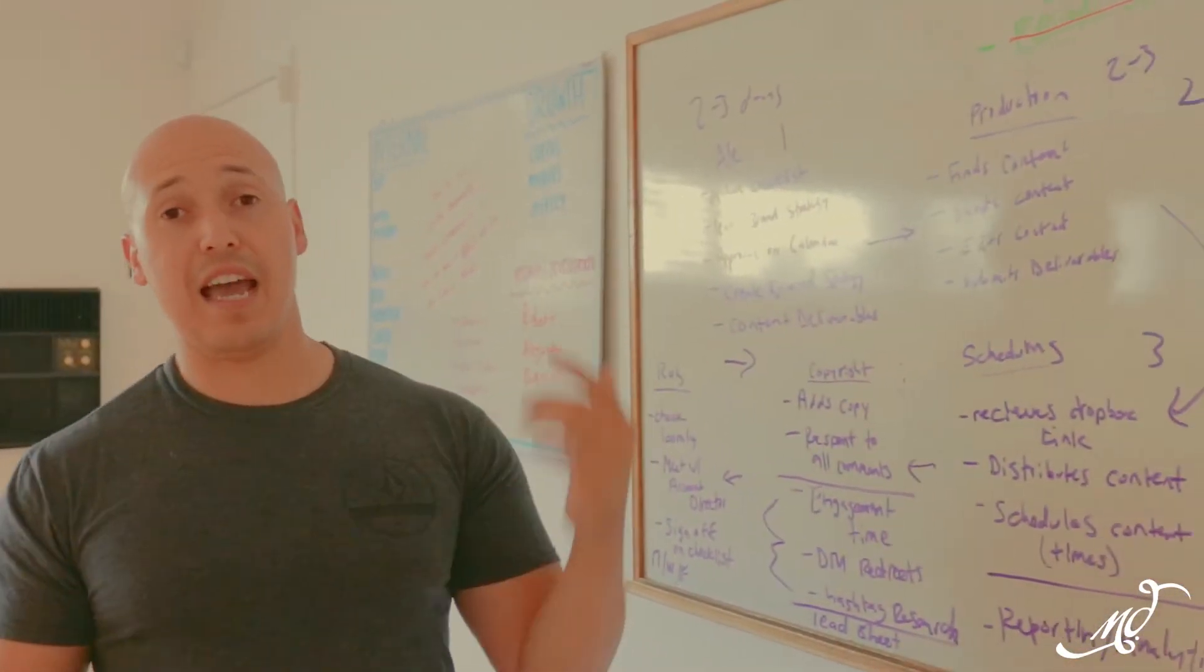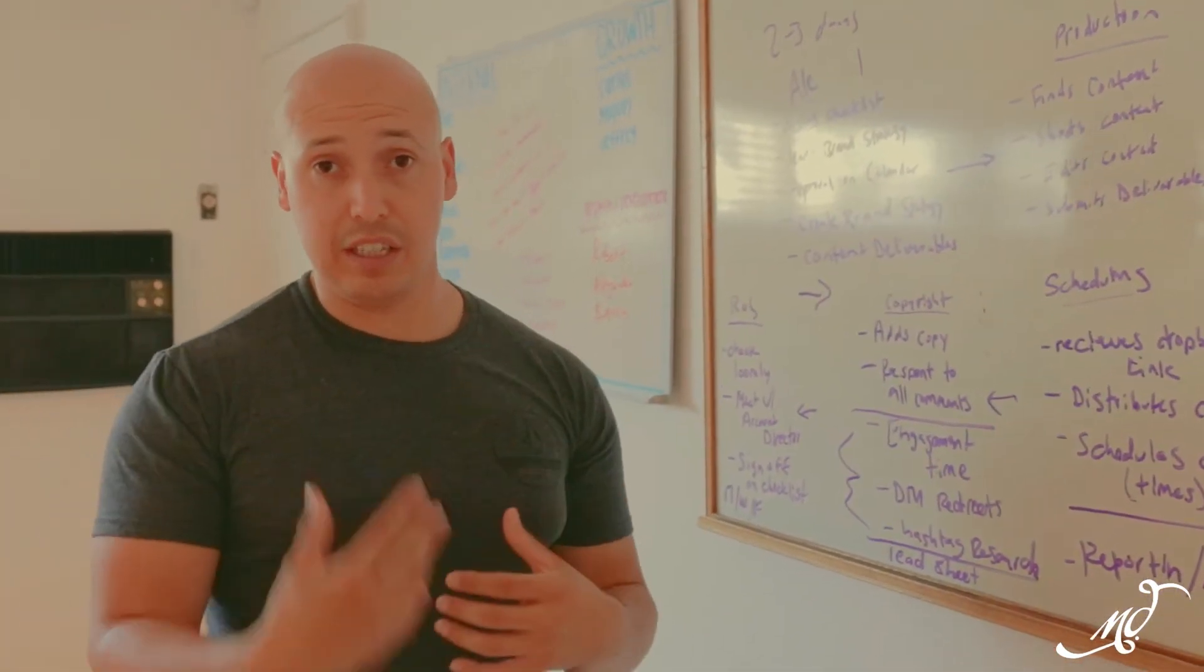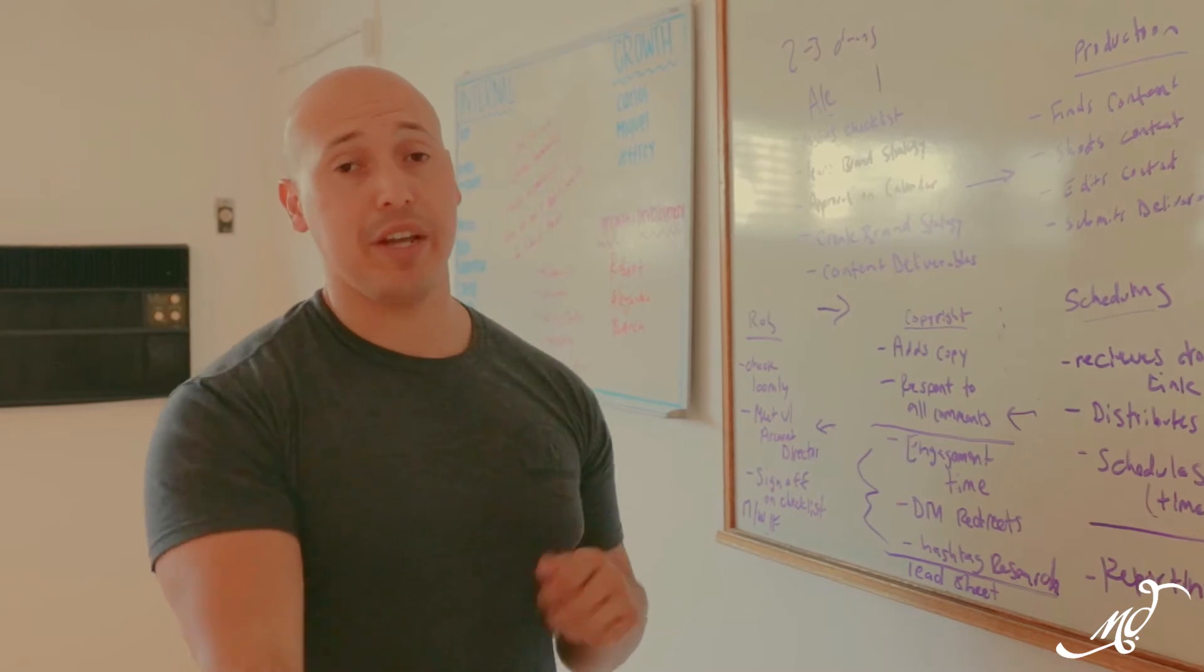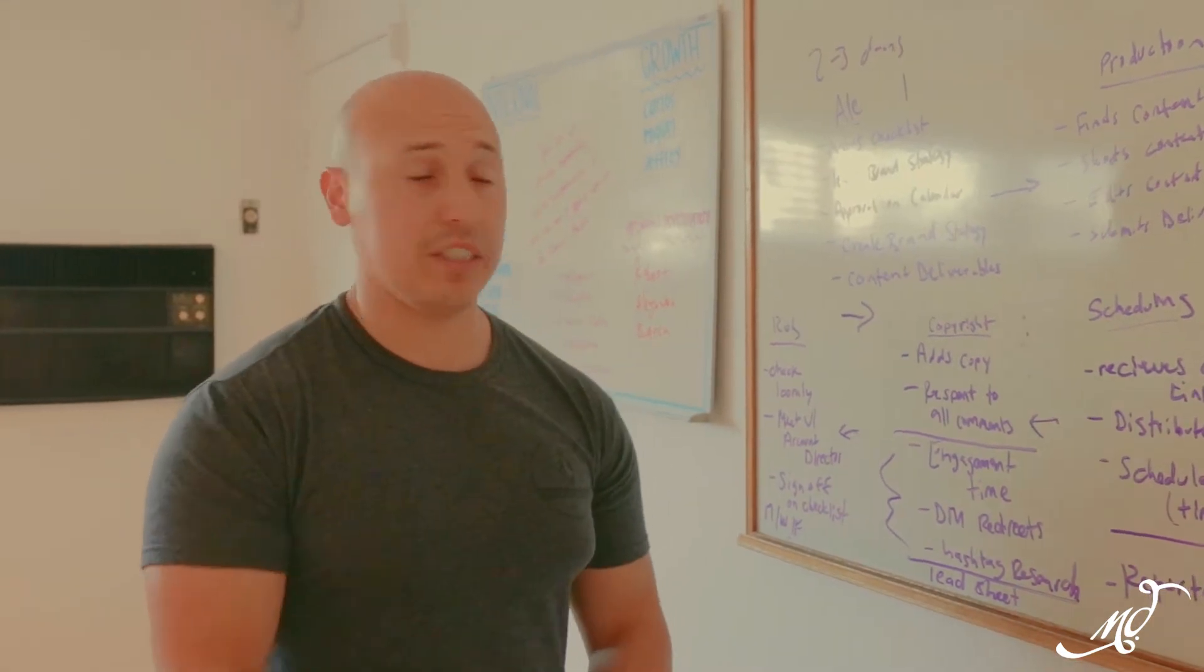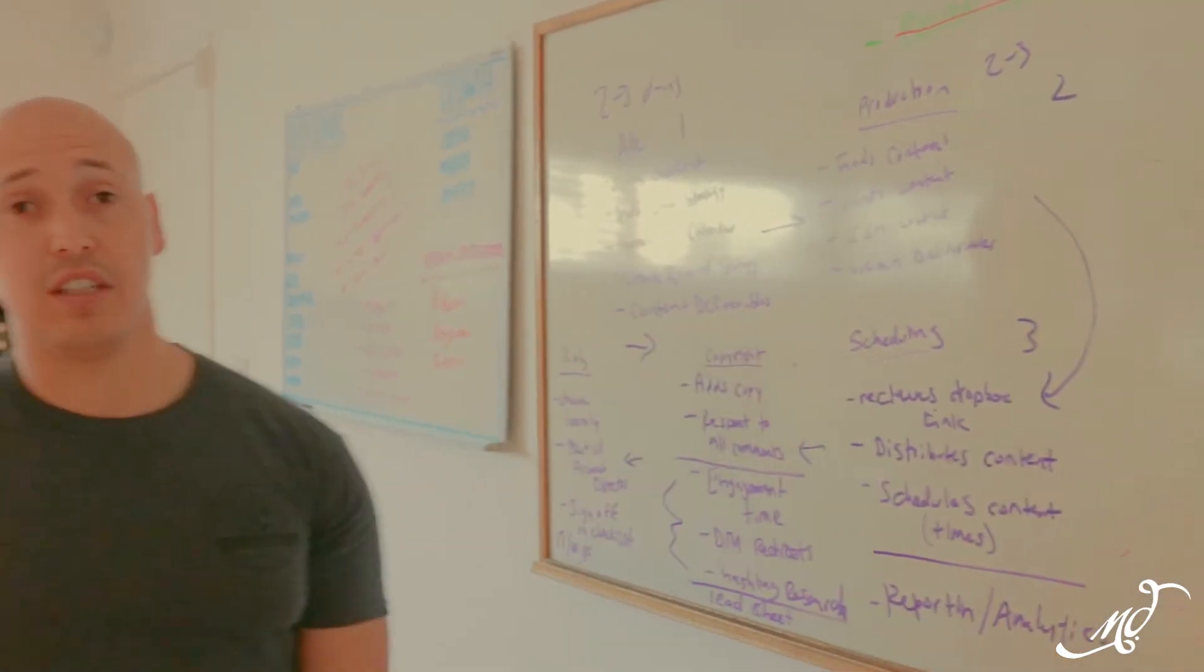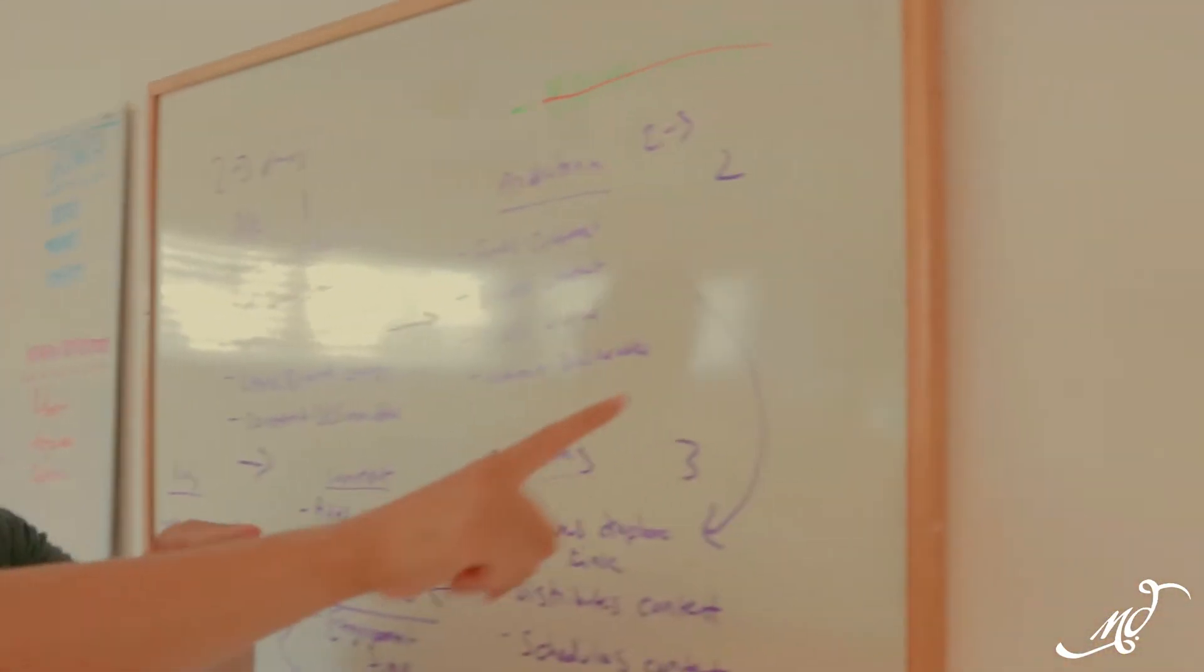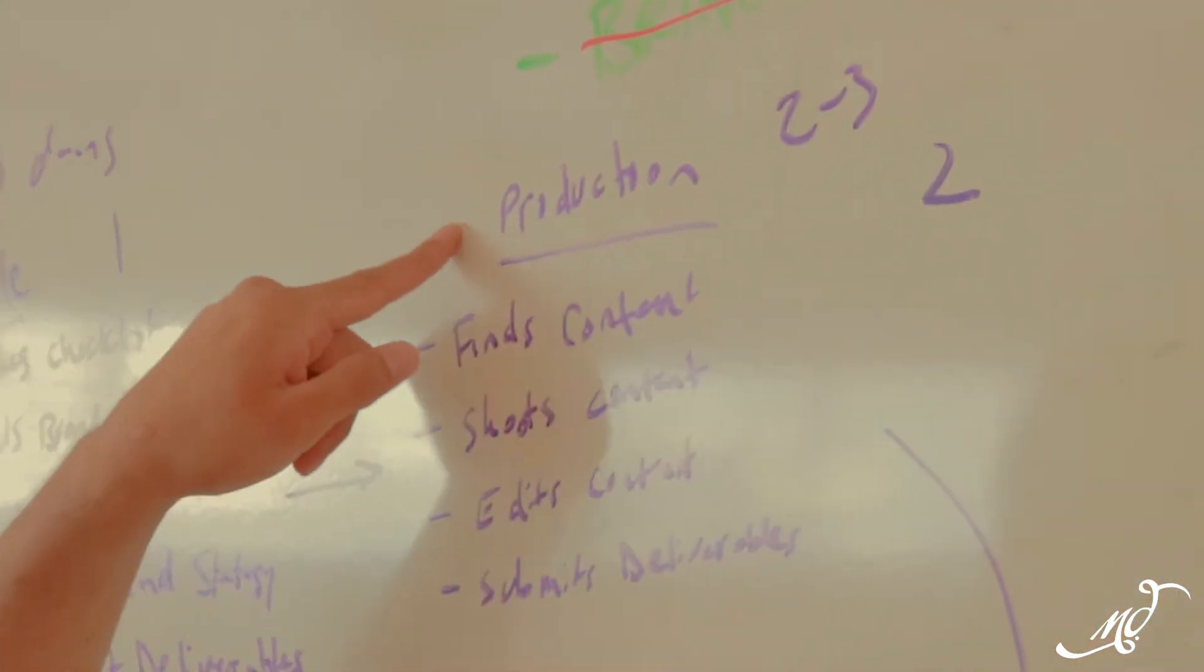Next, we're going to approve the content calendar. So she creates this content calendar, which is where all the stuff that we're going to make lives. And she makes sure that the account manager, production team, and the copywriter all see it. And then gives the content deliverables to the production team. This is the next step. So the next step is the content to the production team.